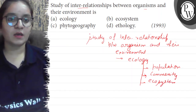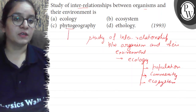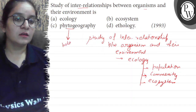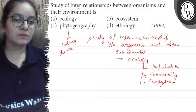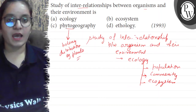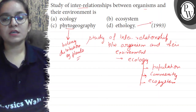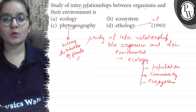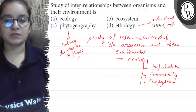So you can see the options here. Phytogeography is a branch of botany that deals with the distribution of plants in different areas. And ethology is the study of individual behavior changes — behavior changes ki study ko hum kya bhol nahin — ethology.